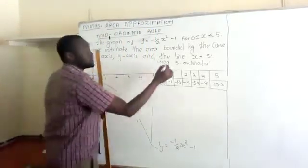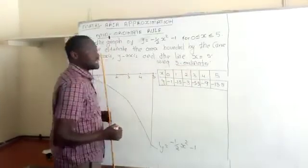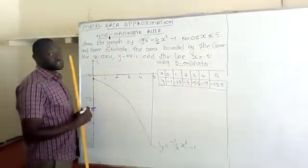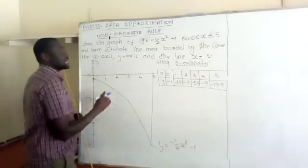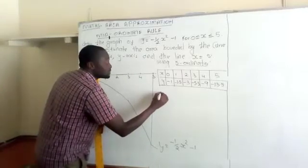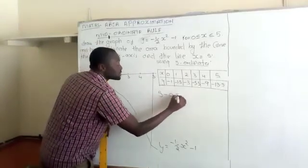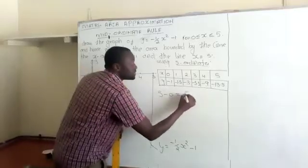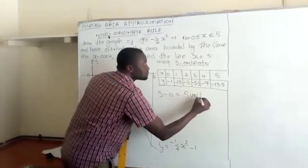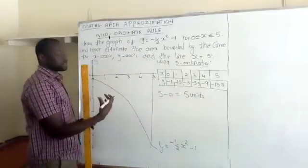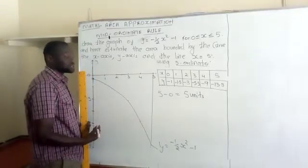And we need to use 5 ordnates. So if we have to use 5 ordnates, what is the length? The length is from 0 to 5, so the total length we have there is 5 units. So if we need to use 5 ordnates, how many rectangles are we going to get?